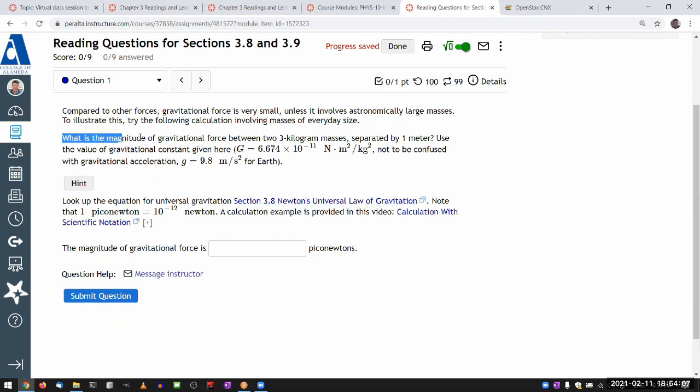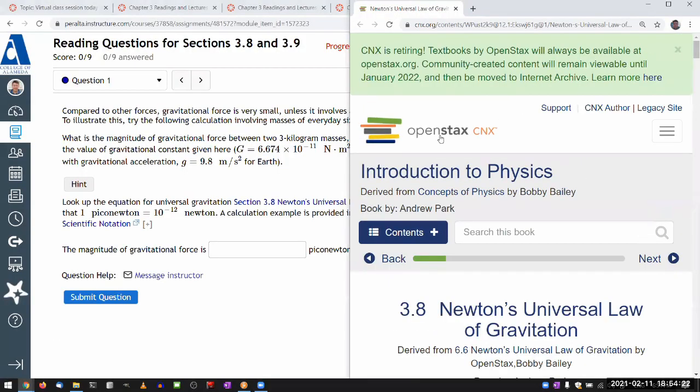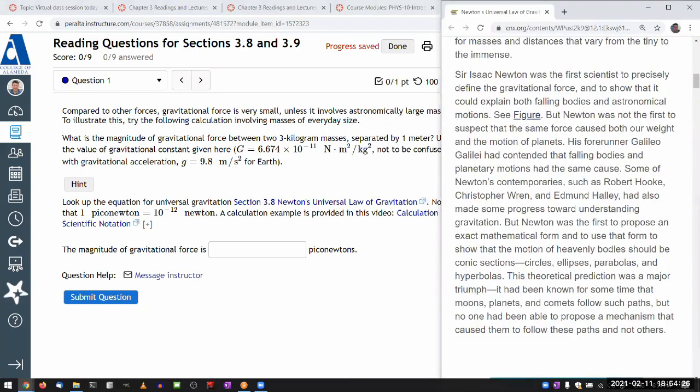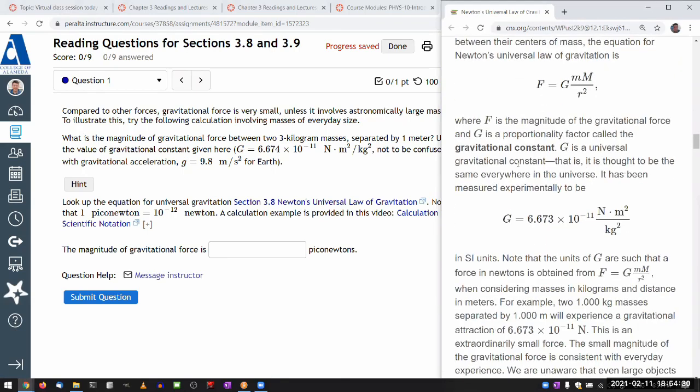And so the question is relatively simple. It's asking, what is the magnitude of gravitational force between two masses of a certain mass separated by some distance? And let me just find the formula in the section and have it on the side so that I don't have to write it down or memorize it. In the Newton's law of universal gravitation, there it is.